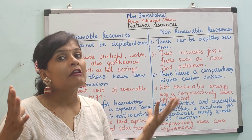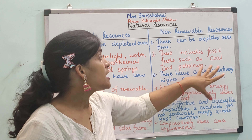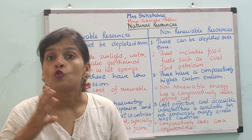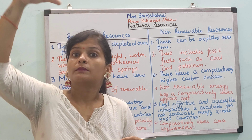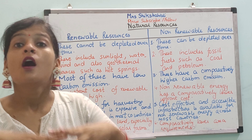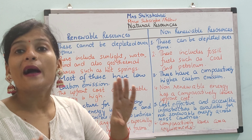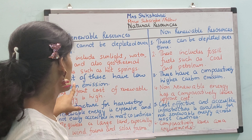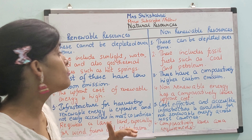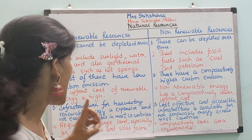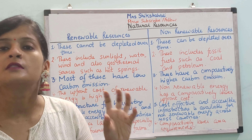The third point: most renewable resources have very low carbon emissions — they do not emit much carbon. However, as you may have noticed, coal, petroleum, and petrol used in our vehicles produce black smoke, which is all carbon emission. Non-renewable resources have comparatively higher carbon emissions compared to renewable resources.